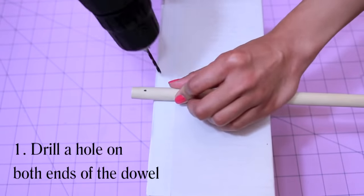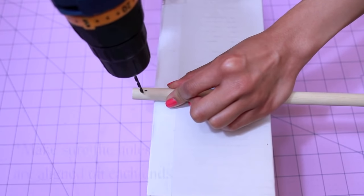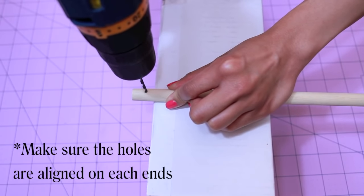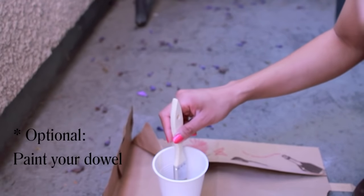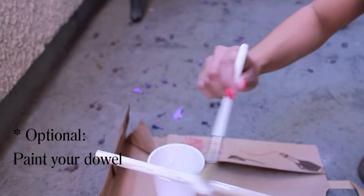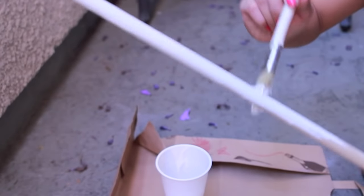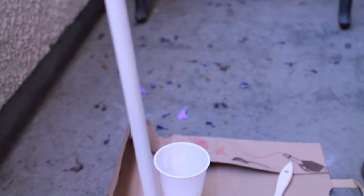First we're going to work on the rod where our braids will be hanging from. We're going to drill a hole on both ends of the dowel. Make sure that these holes are aligned from each other. And this next step is optional, but you can paint your dowel with whatever color you want. Make sure that you let it dry for 24 hours before working on it again.